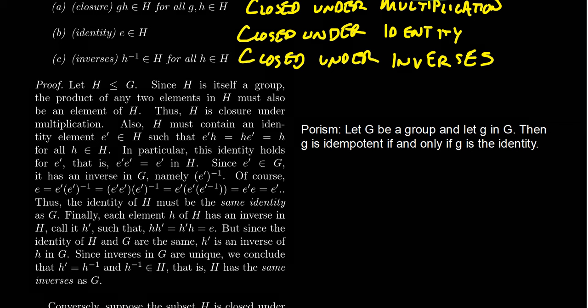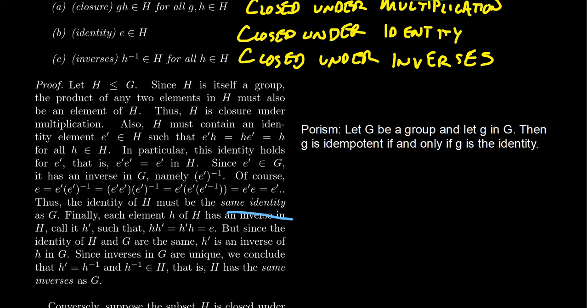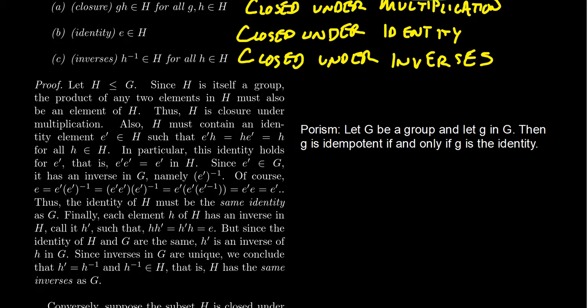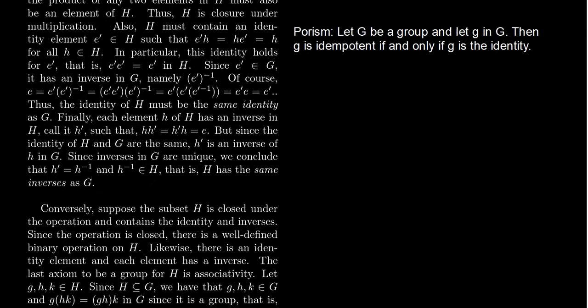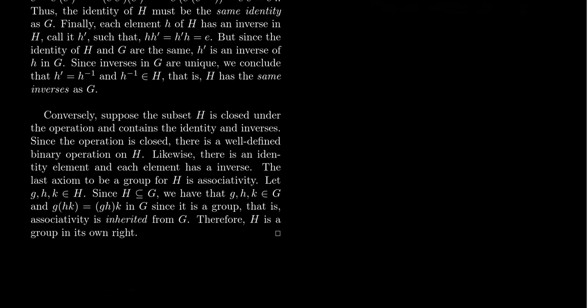H will have the same identity as G and the same inverses as G, although some of those inverses will be missing because some elements of G are likely missing as well. That proves the first direction: if H is a subgroup, then because it's a group inside a group, it will be closed, it has the same identity as G, and it has the same inverses as G.